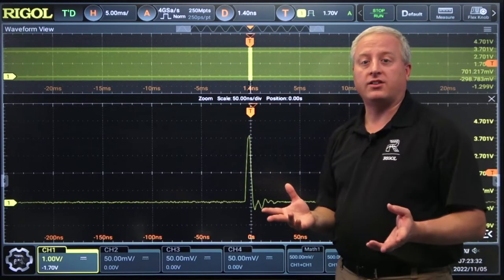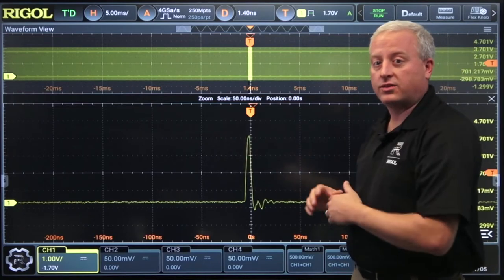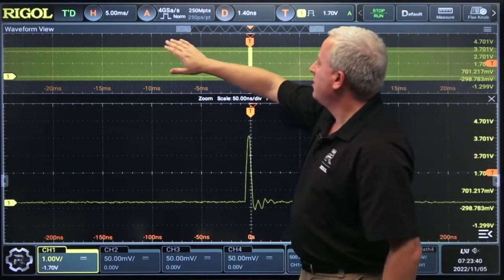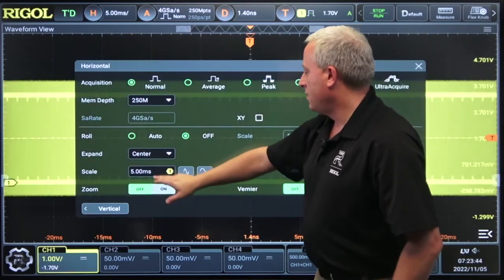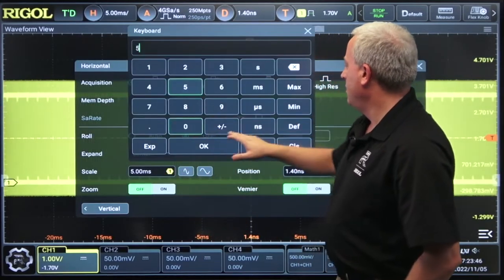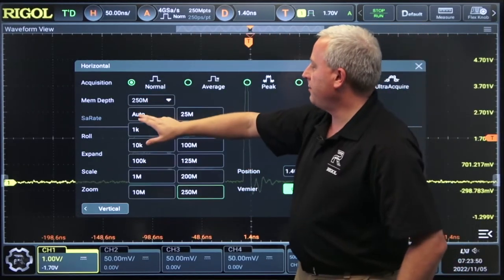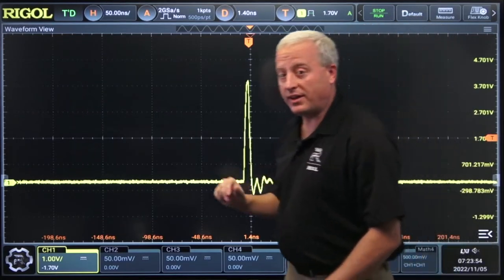Now another way to look at a signal in context is instead of using all the memory for one continuous data set, we can segment that memory. To do that, let's go ahead and turn that zoom off. Go back to 50 nanoseconds per division for our regular signal. And let's turn that memory depth down to the minimum. Now we can look at that signal.